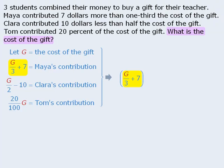If we take Maya's contribution and add Clara's contribution and add Tom's contribution, which we can simplify as follows, the combined sum of their contributions must equal the cost of the gift, g. At this point we have an equation we can solve for g.